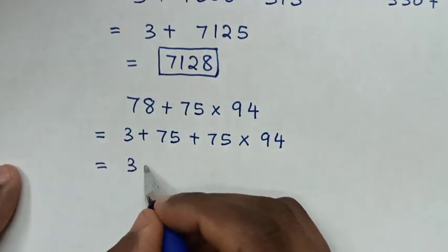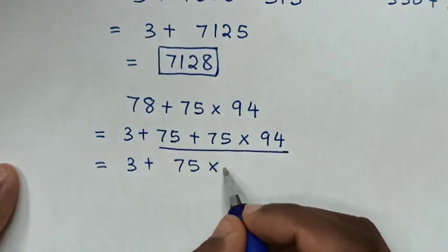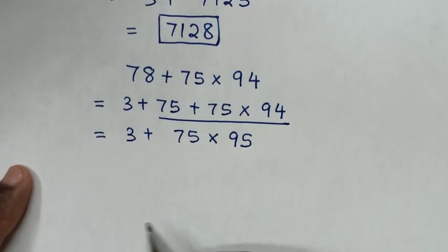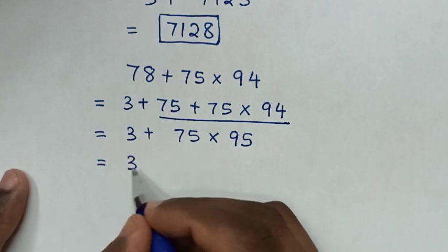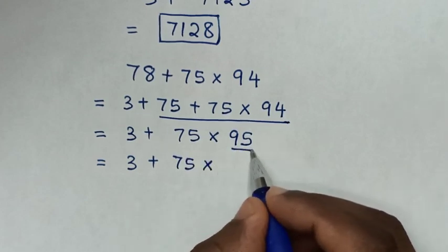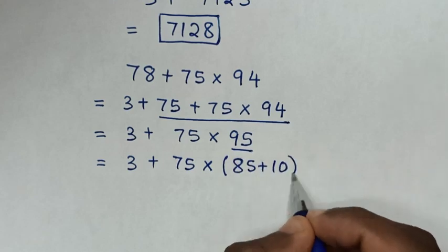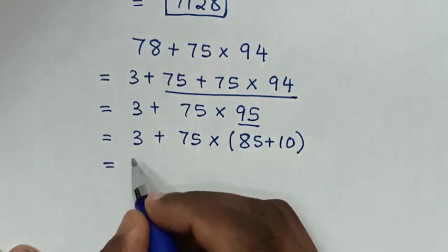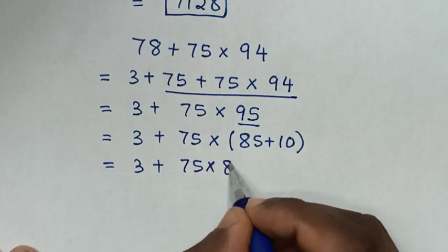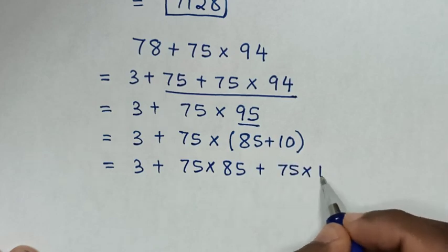Then it will be equal to 3, then plus — from here — it will be equal to 3, then plus this 75, times 95, which is the same as 85 plus 10, in brackets. Then it will be equal to 3, then plus 75 times 85, then plus 75 times 10.